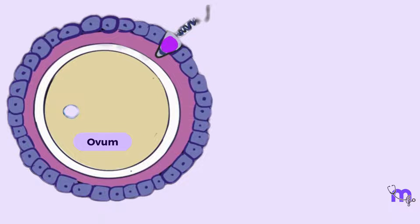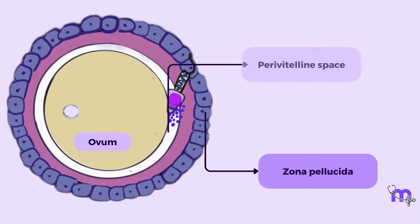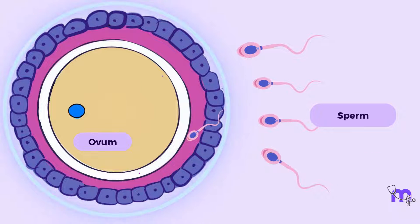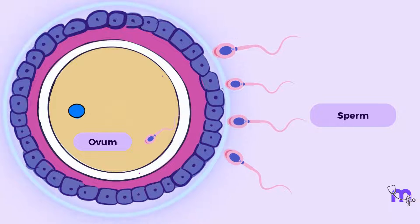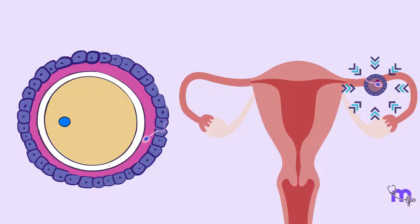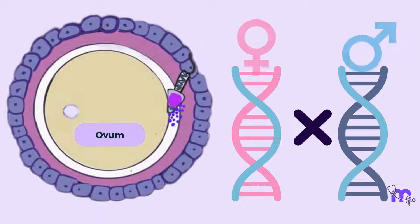Through a series of enzymatic reactions, one sperm cell successfully breaches the zona pellucida, reaching the space immediately surrounding the egg called the perivitelline space. At this precise moment, the egg's membrane undergoes a change — one sperm has made it and the gates are closed so that no other sperm enters. The fusion of the egg and sperm membranes finally occurs in the ampulla of the fallopian tube, resulting in the mixing of genetic material from both parents.